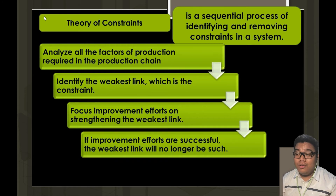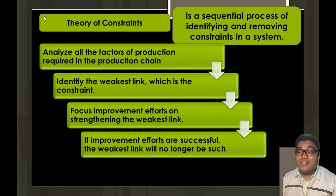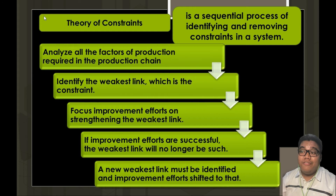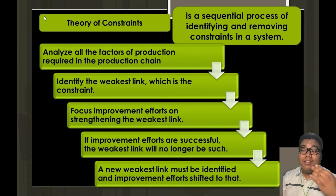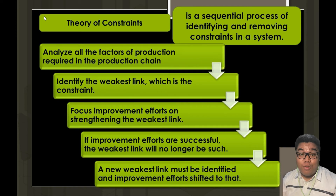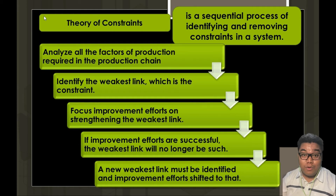When improvement efforts are successful, the previous bottleneck will no longer be the weakest link, and a new weakest link will emerge. We then go back to analyzing all factors of production, identify the new weakest link, and focus improvement efforts on it. This process repeats until there are no more constraints — though ultimately, there will always be something that needs improvement in an organization.